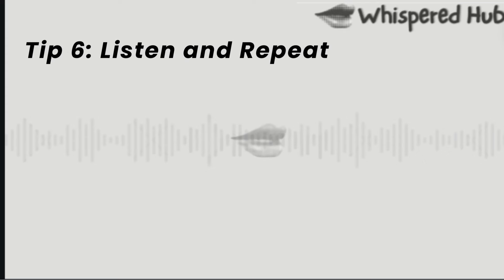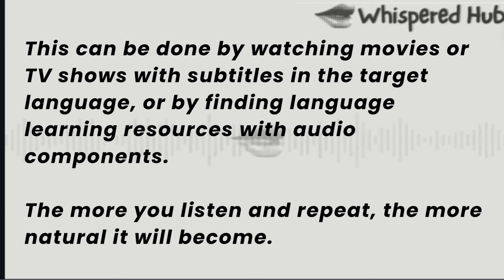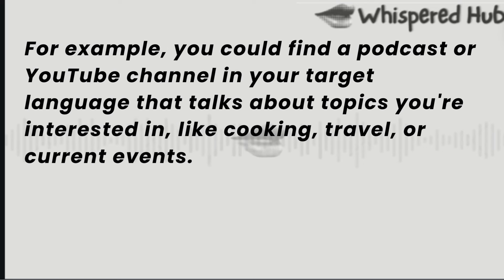Tip 6: Listen and repeat. One of the best ways to train your brain to stop translating is to listen to native speakers and repeat what they say. This can be done by watching movies or TV shows with subtitles in the target language, or by finding language learning resources with audio components. The more you listen and repeat, the more natural it will become. For example, you could find a podcast or YouTube channel in your target language that covers topics you're interested in, like cooking, travel, or current events.